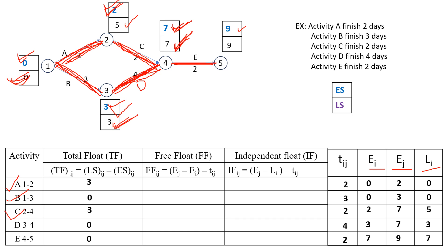Now we substitute all values into the free float equation: free float equals Ej minus Ei minus Tij. For activity A: 2 minus 0 minus 2 equals 0. For activity B: 3 minus 0 minus 3 equals 0. For activity C: 7 minus 2 minus 2 equals 3. For activity D: 7 minus 3 minus 4 equals 0. For activity E: 9 minus 7 minus 2 equals 0.